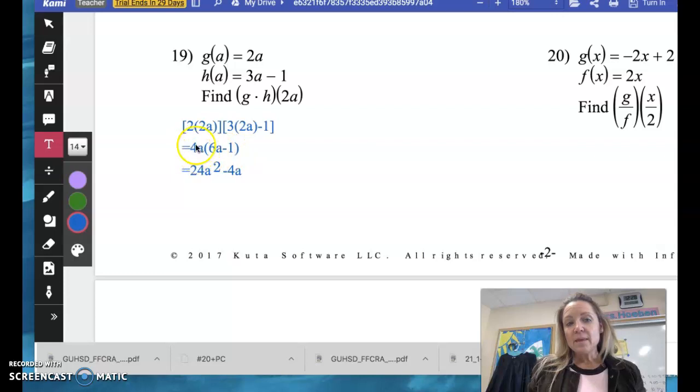and then I'm just going to distribute that 4a out. So 4a times 6a is 24a squared, and 4a times negative 1 is minus 4a.